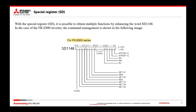The special registers represent the second method available to program the PLC. Unlike the special relays, here the SIM register is always used, which is represented by the word SD1148, and through the combination of bits we can obtain multiple functions. So in the case of the E800 inverter, for example, if I wanted the forward command at the RM speed, I would have to write in hexadecimal H9.